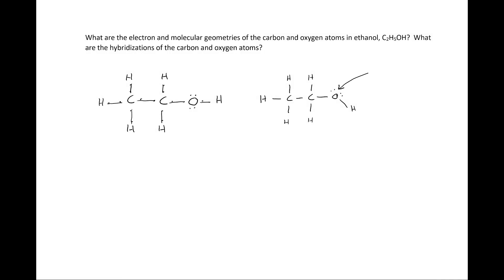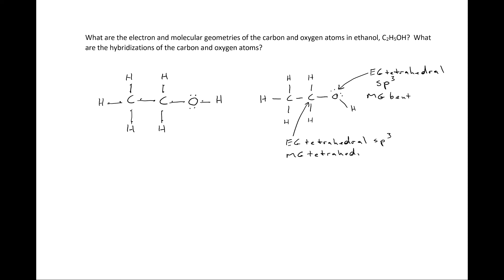The electron geometry of the oxygen atom is tetrahedral, the hybridization is sp3, and the molecular geometry is bent. Looking at the first carbon atom, we see that the electron geometry is tetrahedral, the hybridization is sp3, and the molecular geometry is tetrahedral. Looking at the other carbon atom, we see its electron geometry is tetrahedral, the hybridization is sp3, and the molecular geometry is tetrahedral.